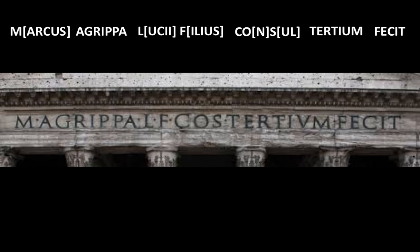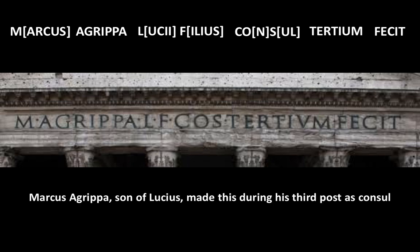Therefore, we have a name — Marcus Agrippa — a reference to the person whose father Marcus Agrippa was son of, and then an indication that this was made during his third post as Consul of Rome. So the sentence reads: Marcus Agrippa, son of Lucius, made this building during his third post as Consul. This is a typical inscription which is a tribute to the person under whose political authority this building was erected.